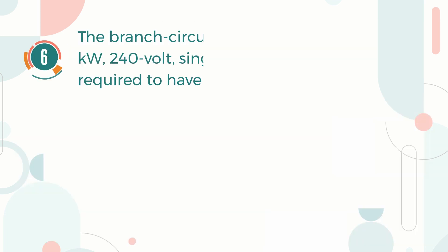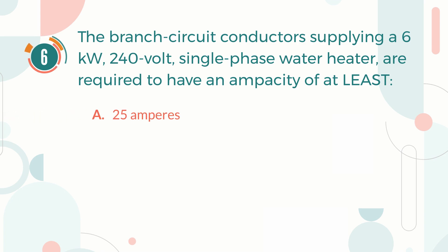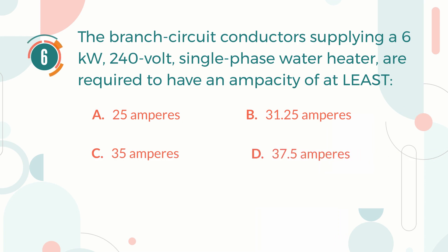Number 6. The branch circuit conductors supplying a 6 kW, 240 volt, single phase water heater are required to have an ampacity of at least: A. 25 amperes. B. 31.25 amperes. C. 35 amperes. D. 37.5 amperes.